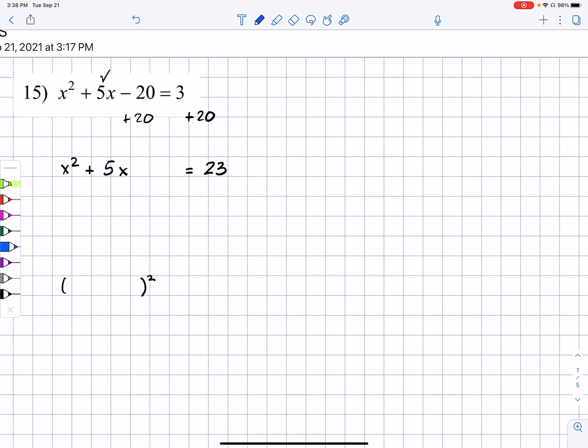So our first step is to take half the b value, which would be 5 halves, and square it. That is the little algorithm that gives us this pattern. So we get 25 fourths. Of course, that's positive. We just squared it.